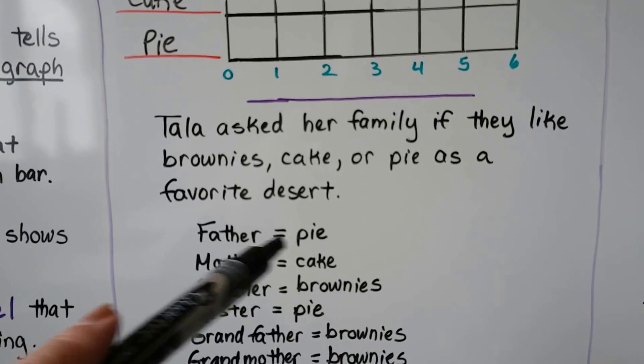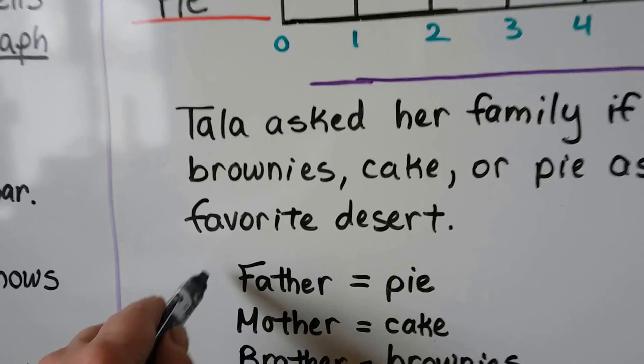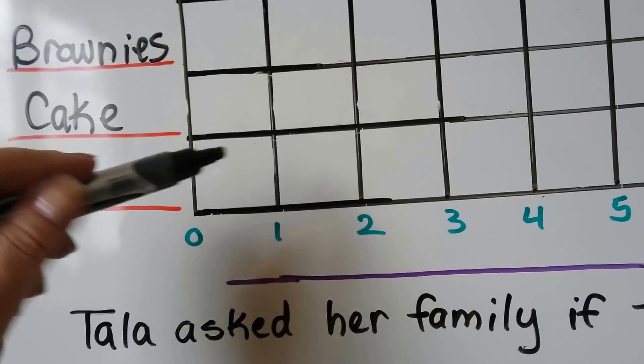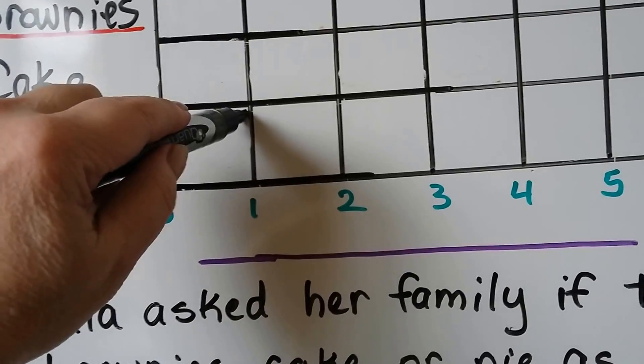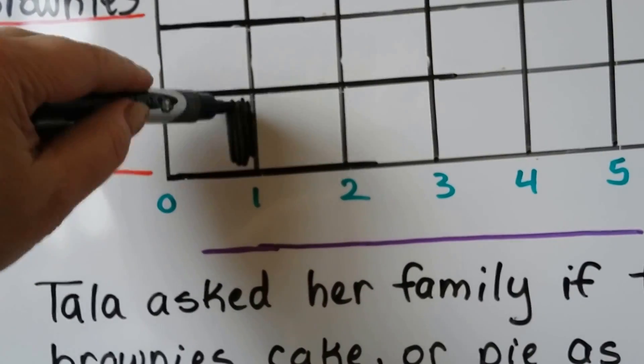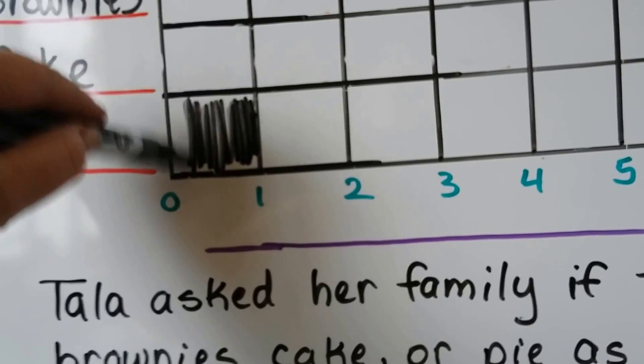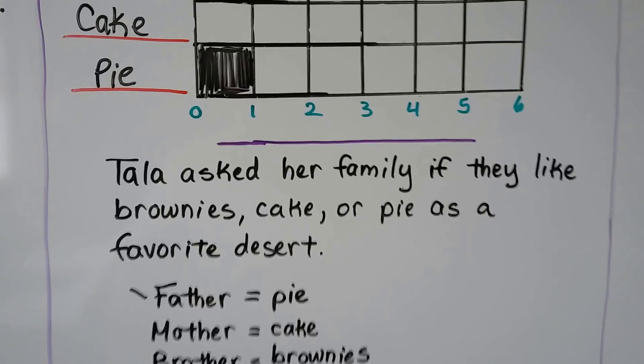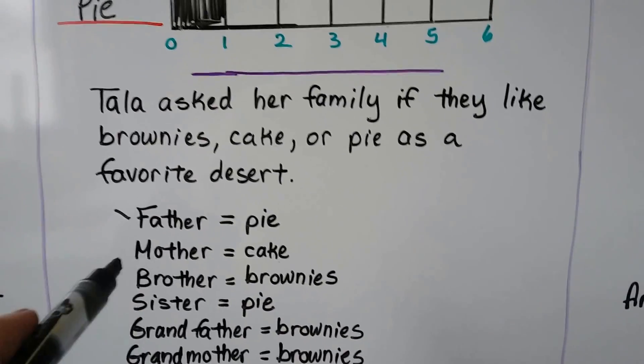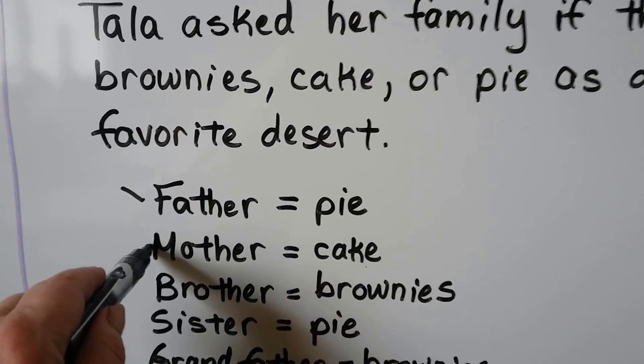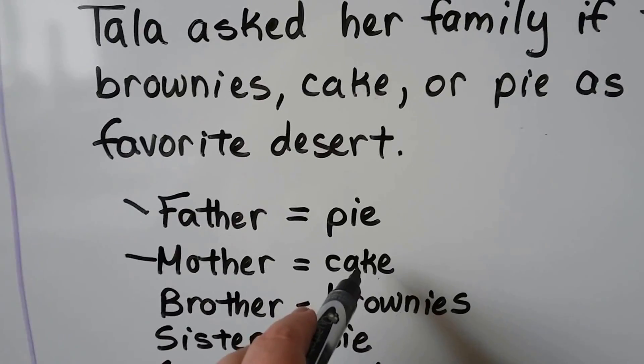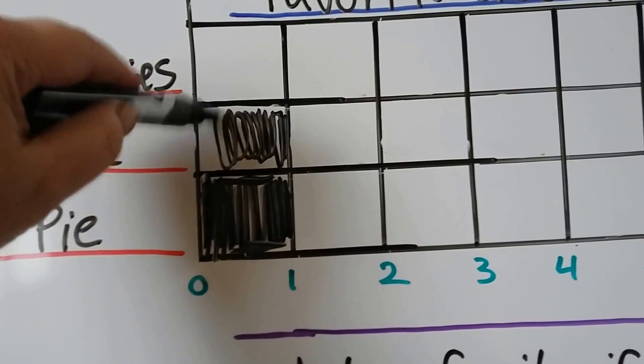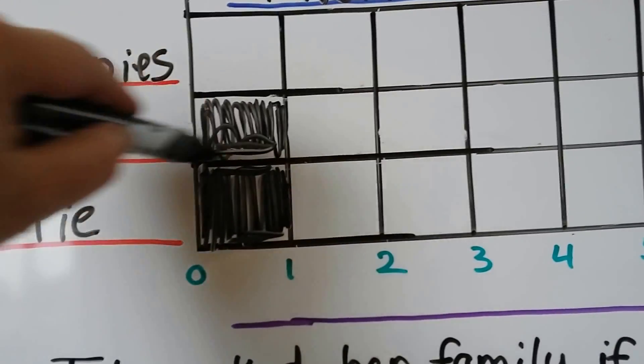And this is what they said. Her father said he likes pie. So let's mark that off that we are doing the father. So we're going to fill in this box for pie for her father. We can fill it in as well as we can here. It won't be perfect, but it will be filled in.